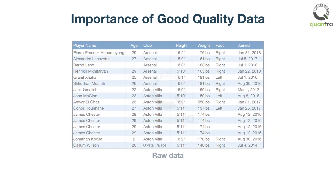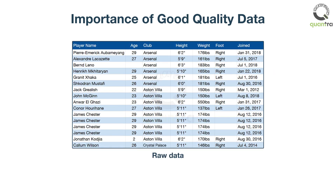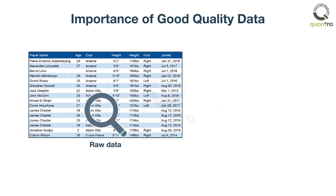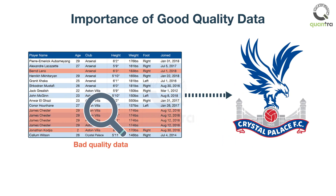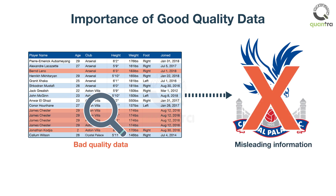For example, if you start the analysis without ensuring data quality, then you might get unexpected results, such as Crystal Palace Club will win the next EPL. However, your domain knowledge says that the result looks inaccurate, as Crystal Palace has never even finished in the top four.